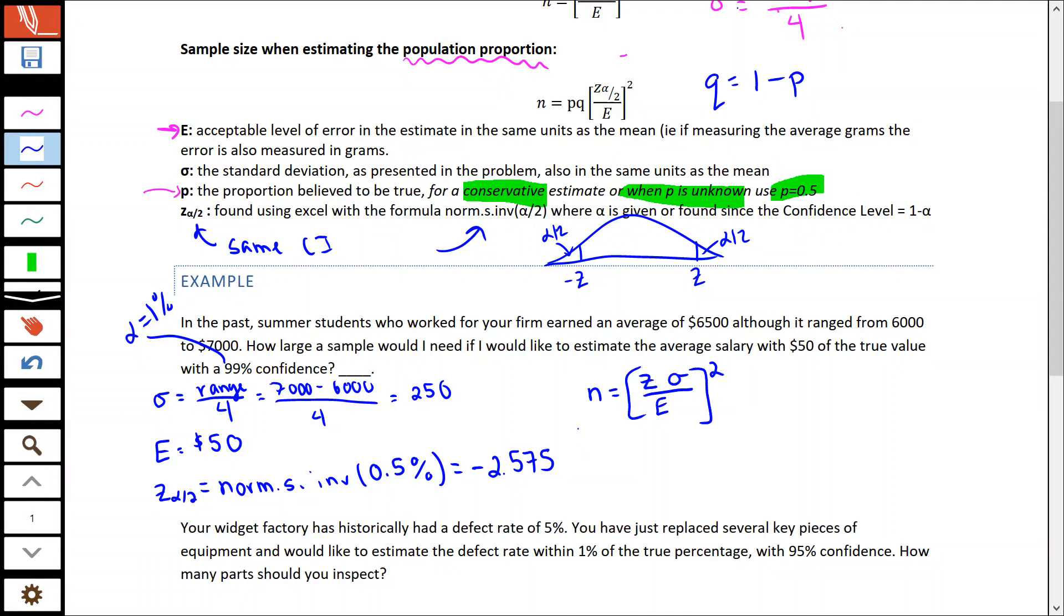Because we're talking about something we can measure - we have a standard deviation, we have a range - we know it's our first formula, where n equals that Z value times our standard deviation over the error, and then that whole thing is squared. The biggest mistake I see people doing when they send me these problems is that they forgot to square the answer. They did the calculation, and they just forgot to square it. So don't forget about that.